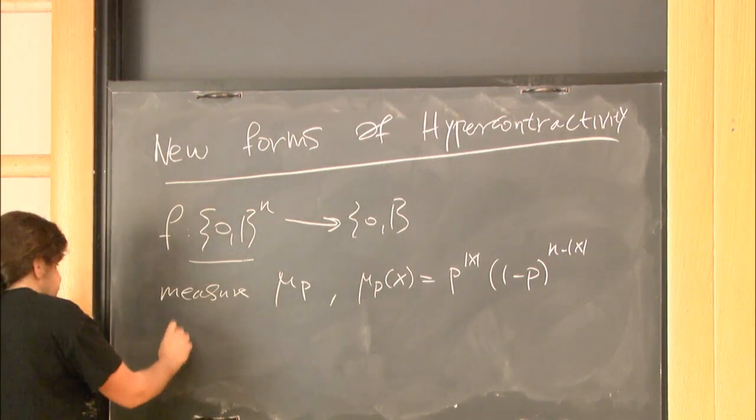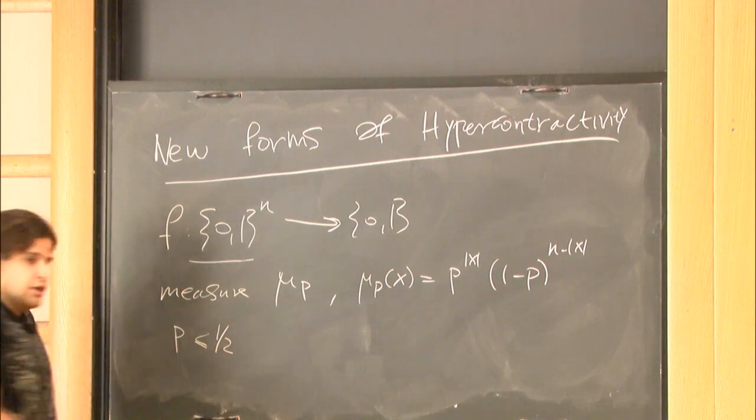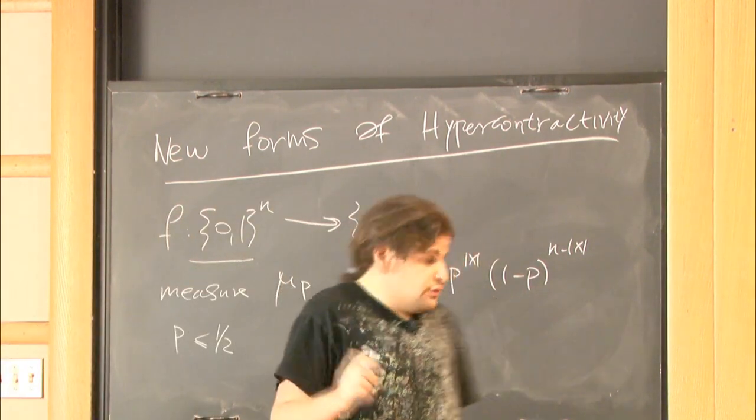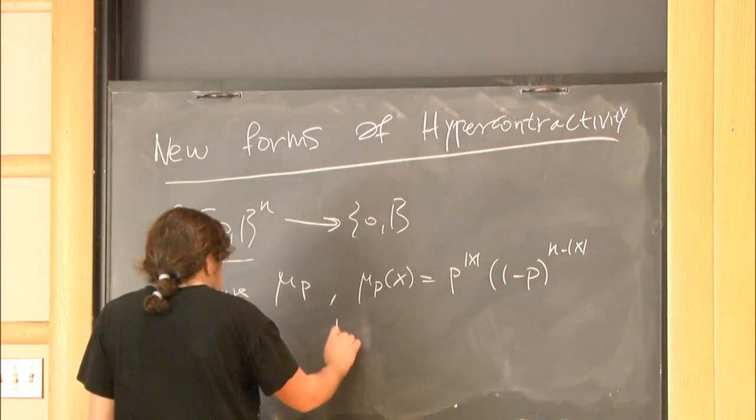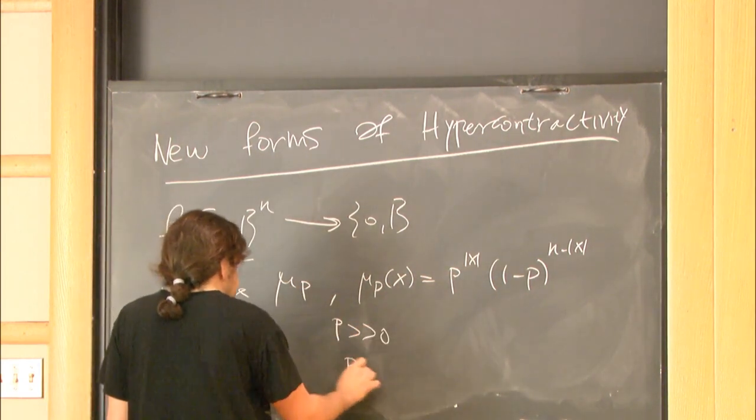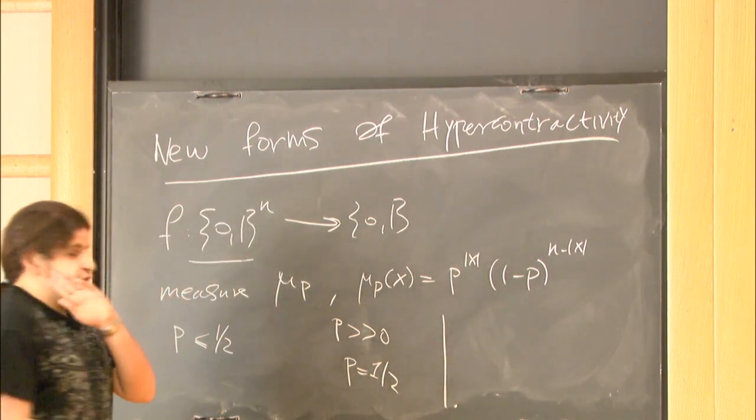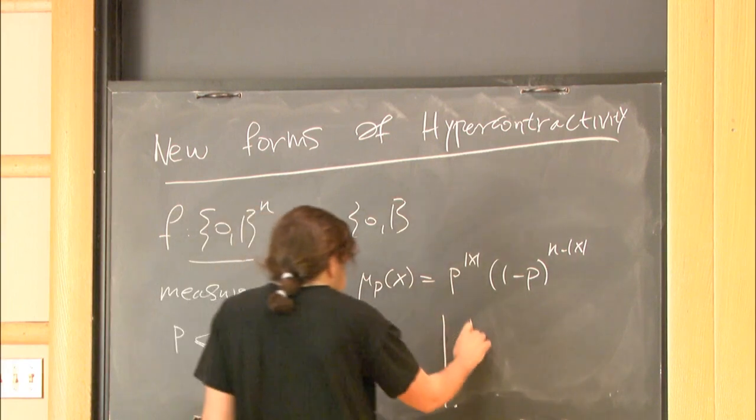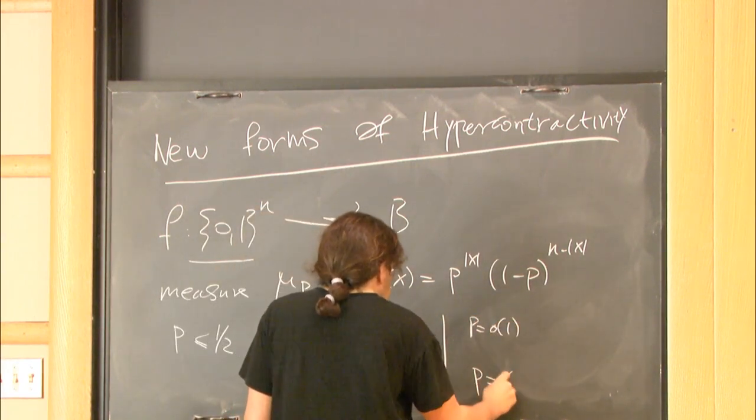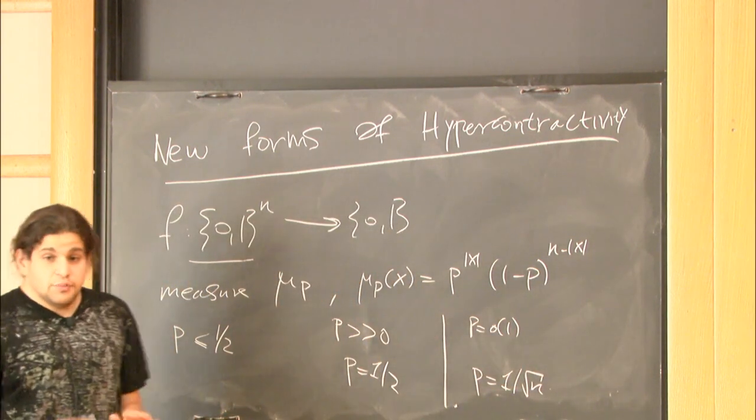And we'll always be working with p which is at most half, and somewhat mentally, you should think of two regimes. One in which p is bounded away from 0, say p equals half, and the other where p is a vanishing function of n. Say p is equal to 1 over root n. The behavior in each regime is going to be very different.